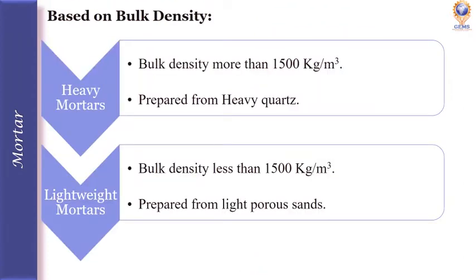Based on bulk density, according to the bulk density of mortar in dry state, mortars are of two types. One is heavy mortars, which are prepared from heavy quartz and have a bulk density of more than 1500 kg per cubic meter. The other is lightweight mortars, which are prepared from light porous sand and have a bulk density of less than 1500 kg per cubic meter.